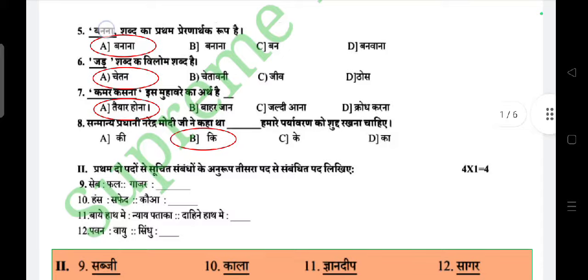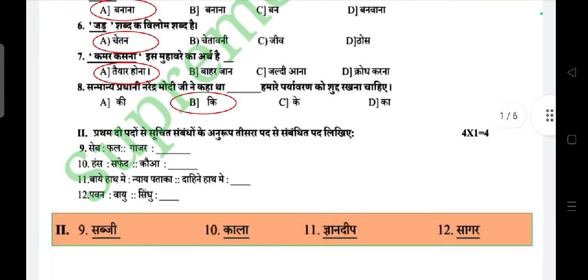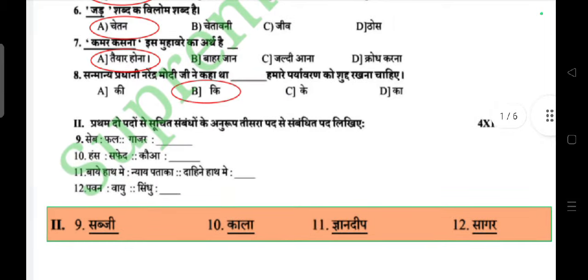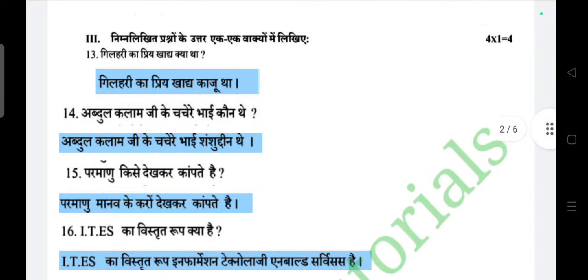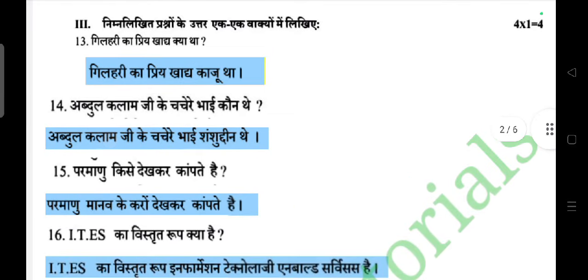Next section: the first two words indicate a relationship, write the third word related to the fourth in the same way. This carries four marks. Example: Seb — phal; Gajar — sabzi. Answer: the orange one. Next: Hansa — safed; Kuwa — kala. Next: Bai hath mein nyay pataka; Dayen hath mein dhyan deep. Next: Pavan — vayu; Sindhu — sagar.